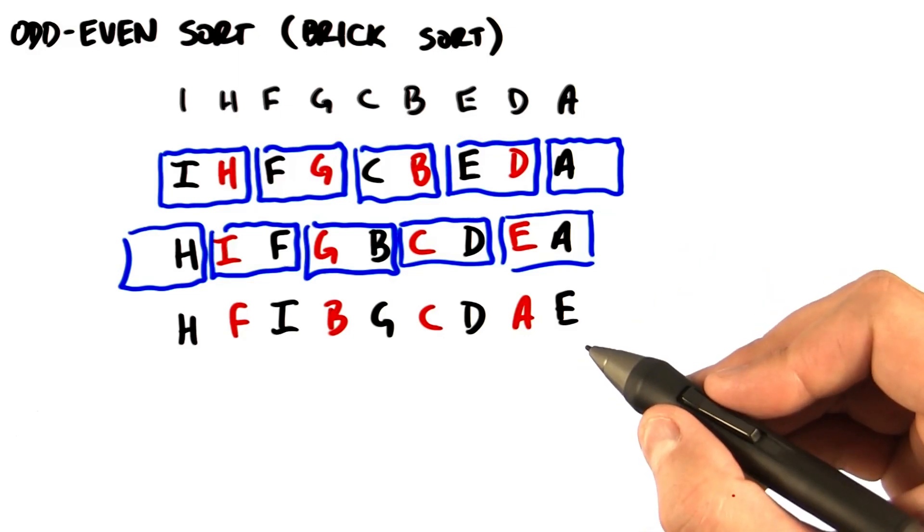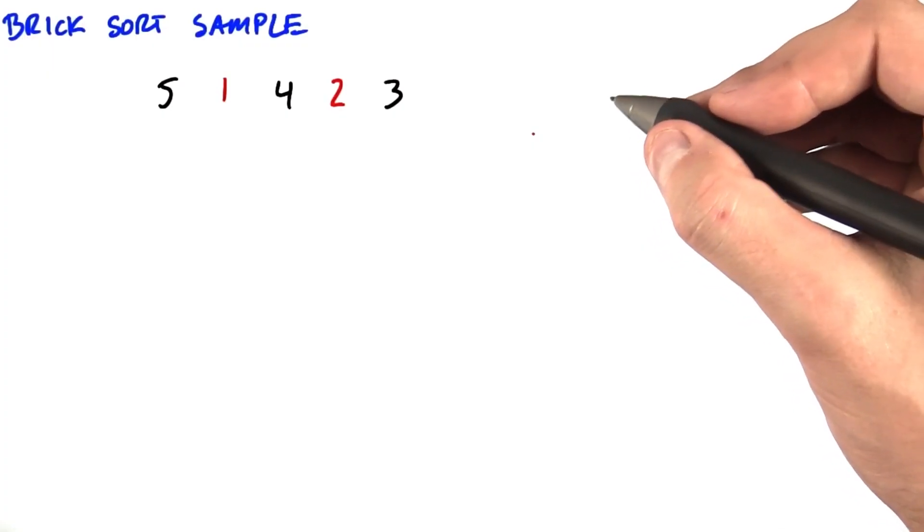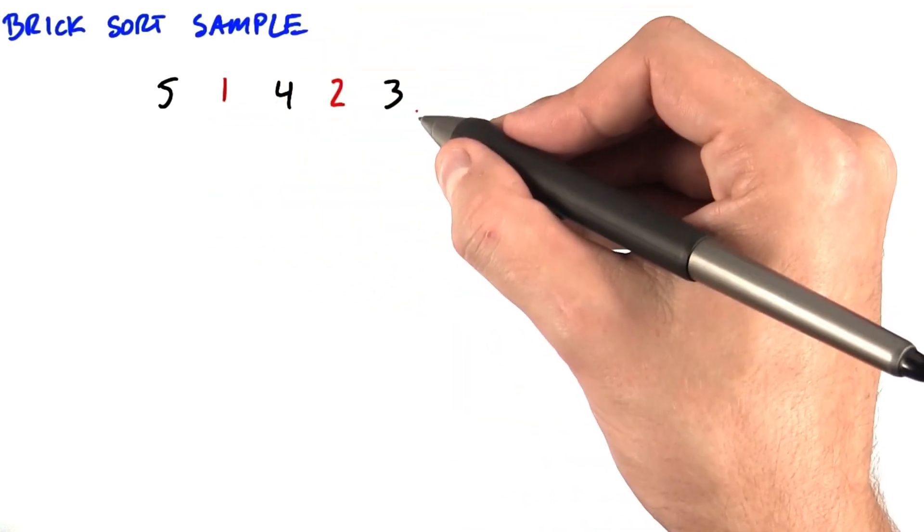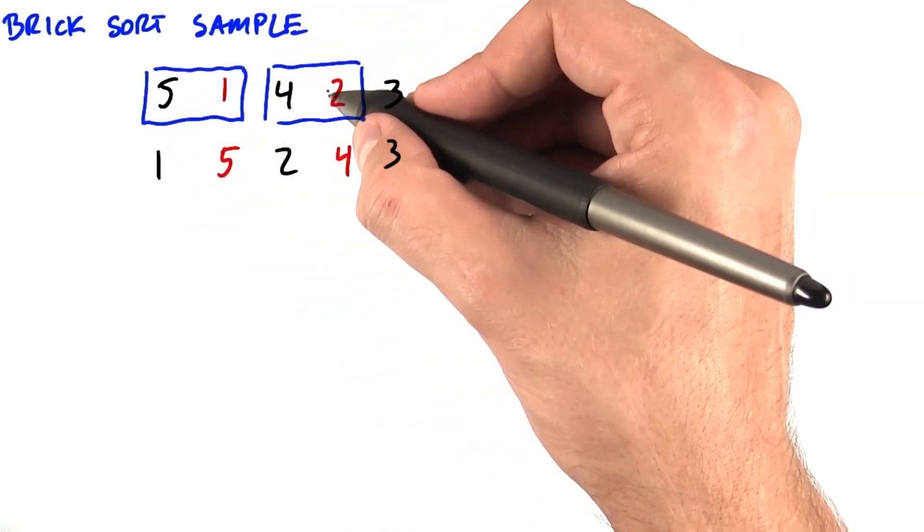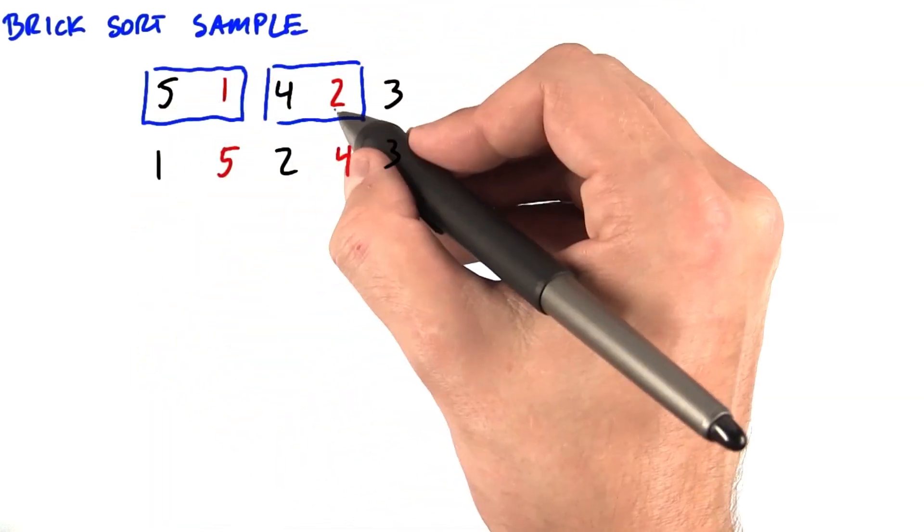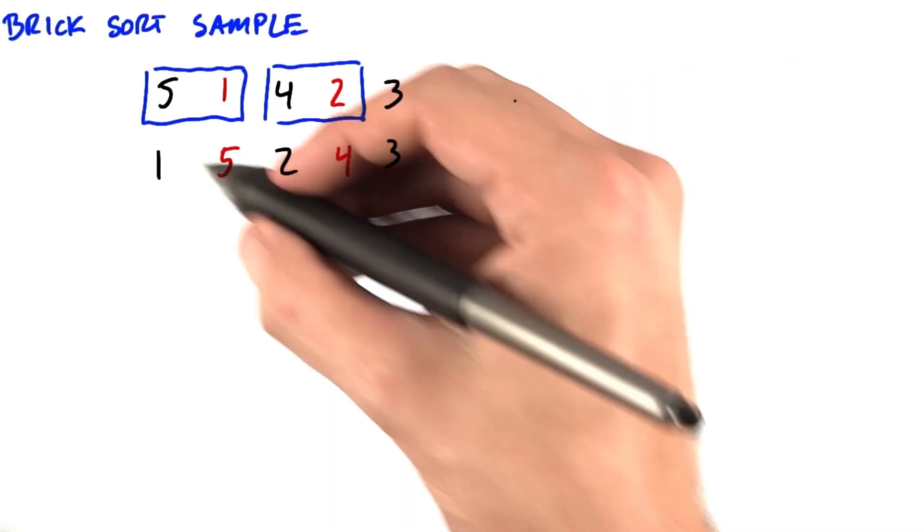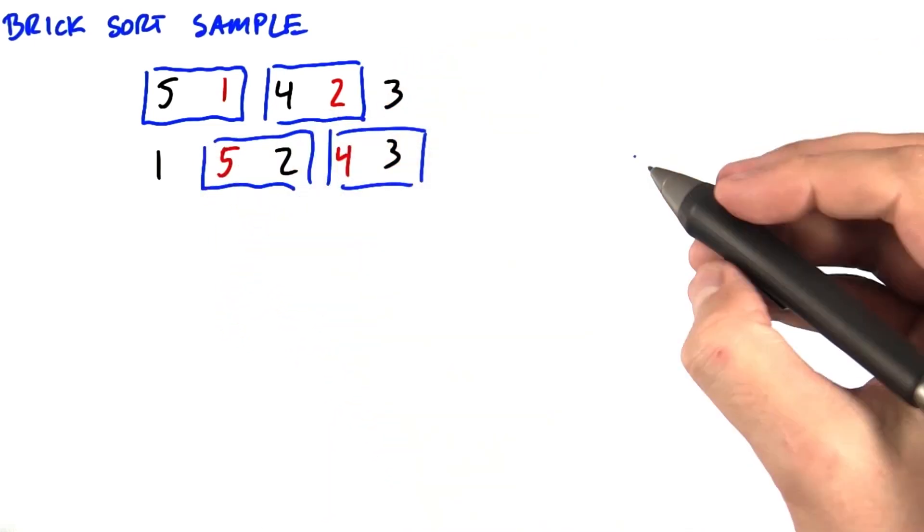So let's try an example. Just to show this with some real numbers, we'll try a sample with these five numbers. We start by pairing them up, starting at the left, and we swap each pair if they're out of order. Then we pair them with the opposite polarity, and continue the process.